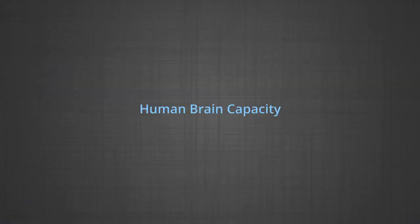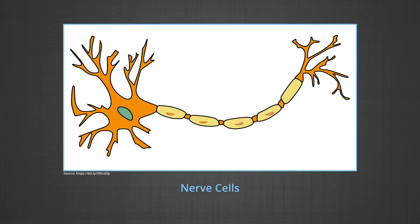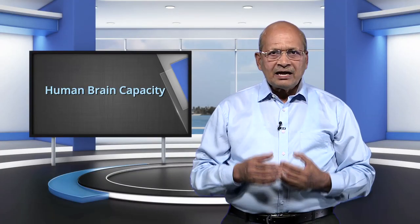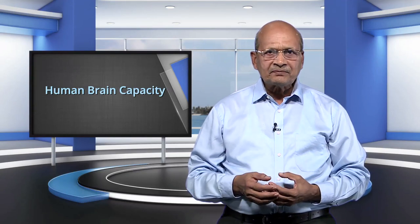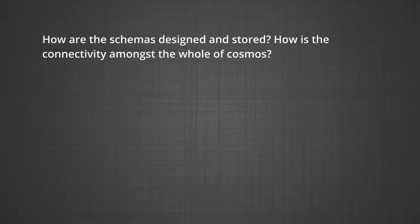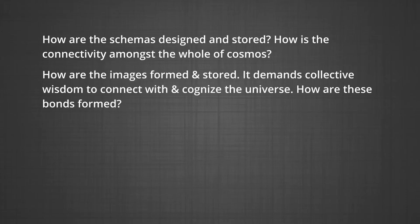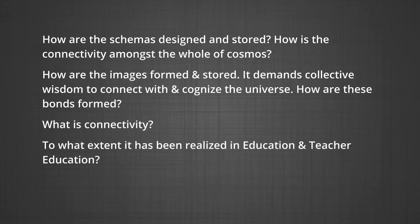Now, let us focus on human brain capacity. The human brain has more than 1 billion nerve cells which are interconnected. The emerging question is: can the human brain reconstruct and cognize the entire universe? What is the reconstruction and storage mechanism? How are the schemas designed and stored? How is the connectivity amongst the whole cosmos? How are the images formed and stored? It demands collective wisdom to connect with and cognize the universe. What is connectivity, and to what extent has it been realized in education and teacher education?